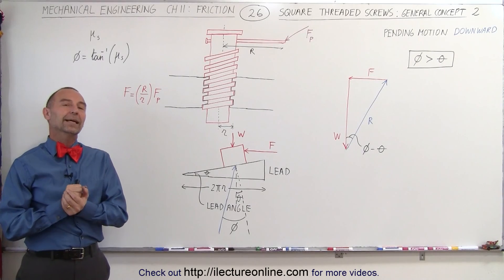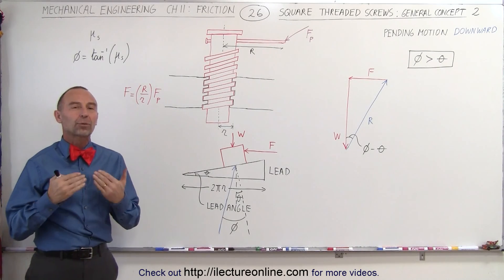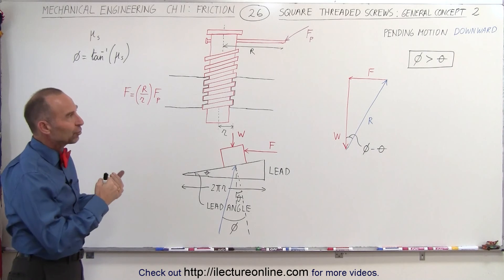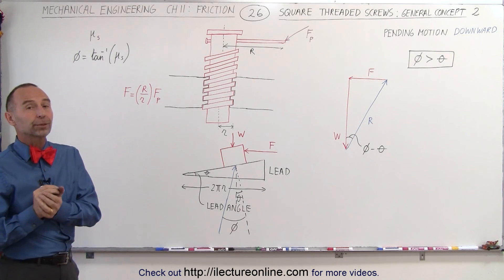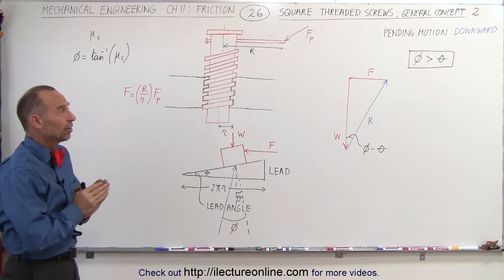Welcome to ElectronLine. Now let's take a look at our square threaded screw in the case where we have pending motion downward. Now there's two different cases that you can encounter.